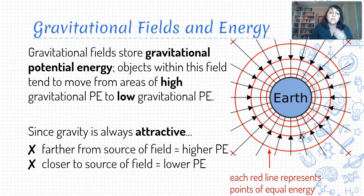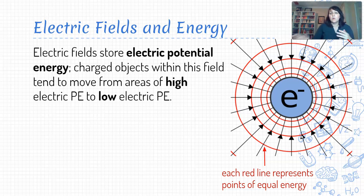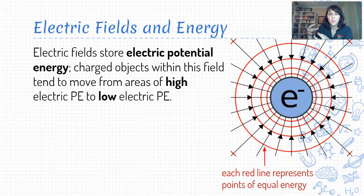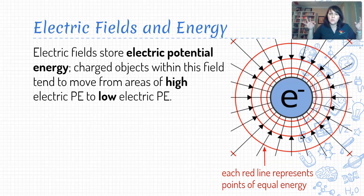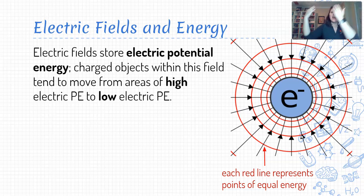Now let's make the jump to thinking about electric fields and energy. Much in the same way as with gravitational fields, electric fields store what's called electric potential energy — same kind of idea, the stored energy that gives charged objects the potential to move. It's that stored energy that can be converted into motion. Just as with gravitation, charged objects will automatically naturally tend to move from areas of high electric potential energy to low electric potential energy.